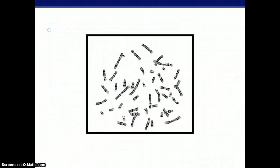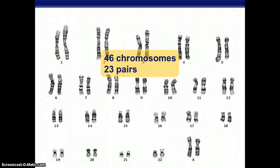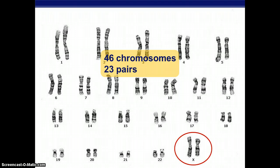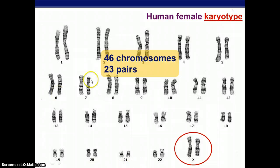If we were to take the chromosomes out of the nucleus of a cell, we can actually map them out by putting them in order from biggest to smallest. There are 46 chromosomes in 23 pairs. You can also see that the 23rd pair is not indicated by the number 23 — it actually shows two X chromosomes, which indicates this is a female. This entire map is called a karyotype.